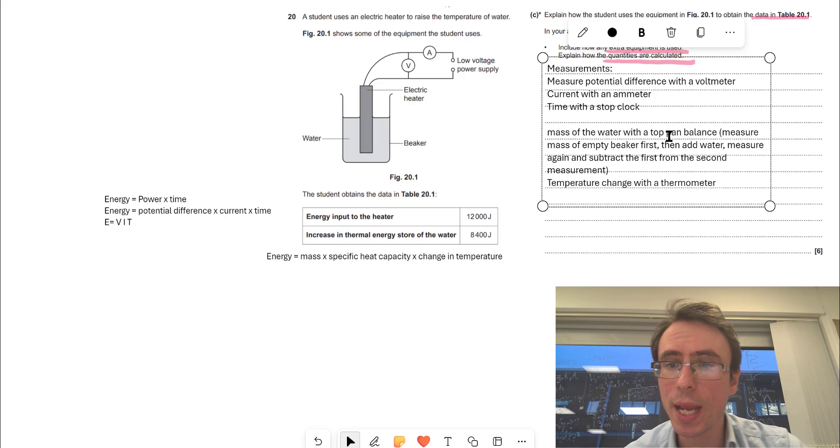And the way we will do that is with a top pan balance. We're going to measure the mass of the empty beaker first, add water, measure again, then subtract the readings.